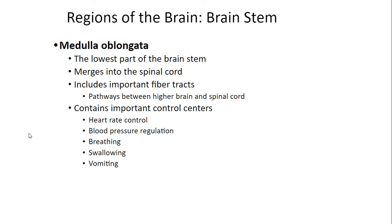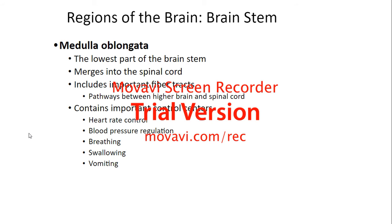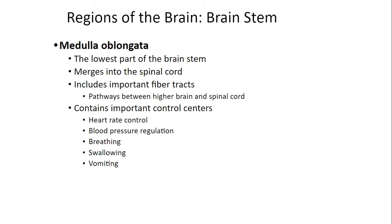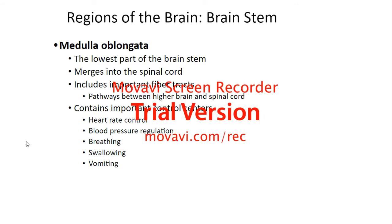The medulla oblongata is the lowest part of the brainstem; it merges into the spinal cord and includes fiber tracts as pathways between the higher brain and the spinal cord. It controls a lot of vital functions: heart rate, blood pressure regulation, breathing, swallowing, and vomiting. That's a lot of important functions going on in the medulla oblongata.